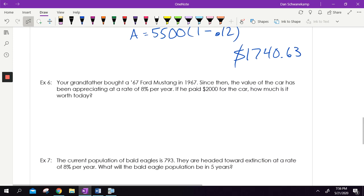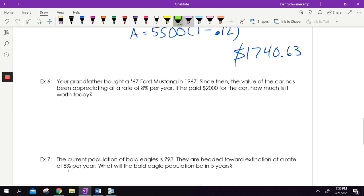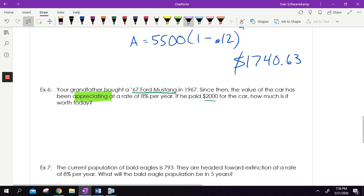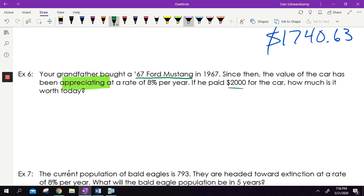Your grandfather bought a 67 Ford Mustang in 1967. Since that year, the value of the car has been appreciating at a rate of 8% per year. If you paid $2,000 for the car, how much is it worth today? And so a little bit different of a problem here. Your brother bought the car. He's going to be driving it every day. It's a Toyota Corolla. It's going to go down in price. Well, this one, your grandfather brought this 67 Ford Mustang. If it's going up $2,000 a year, I'm guessing he's not driving it a lot. It is sitting in his garage. It's now just a cool collector car. So because of that word appreciating, the price is going up. And so it is a plus value there.